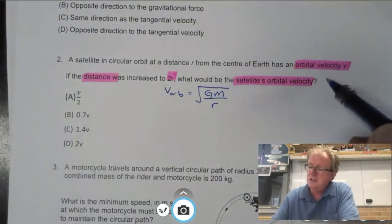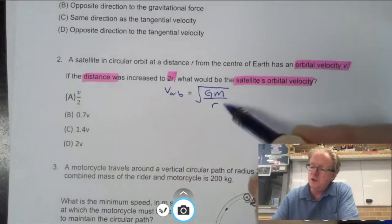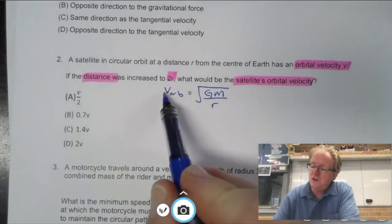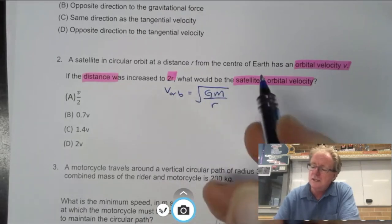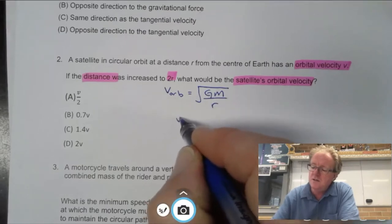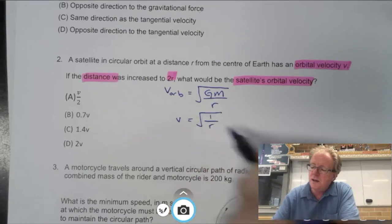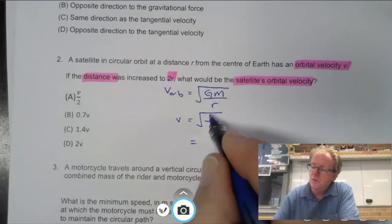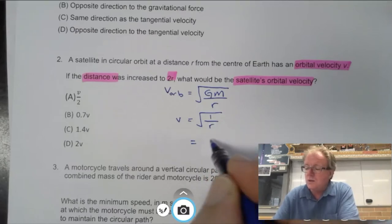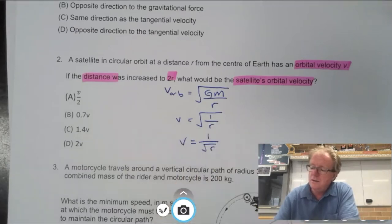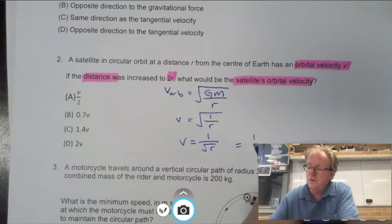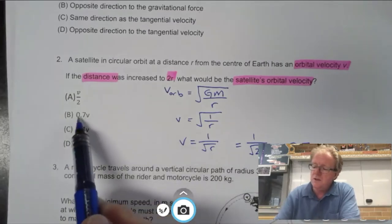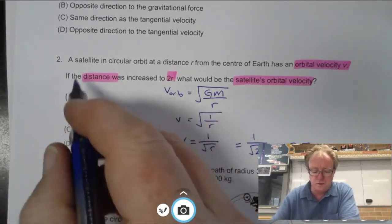If it says here if we increase the distance to 2r, well if we look at the equation here, the velocity is proportional to 1 over r. Let's do velocity is over the square root of 1 over r. That's the same as root 1 divided by root r. Root 1 is 1 over root r. And if we're going to now double the actual radius from r to 2r, let's do that: 1 over root 2, and that turns out to be 0.7. So it's 0.7v, which is the correct response here, B.